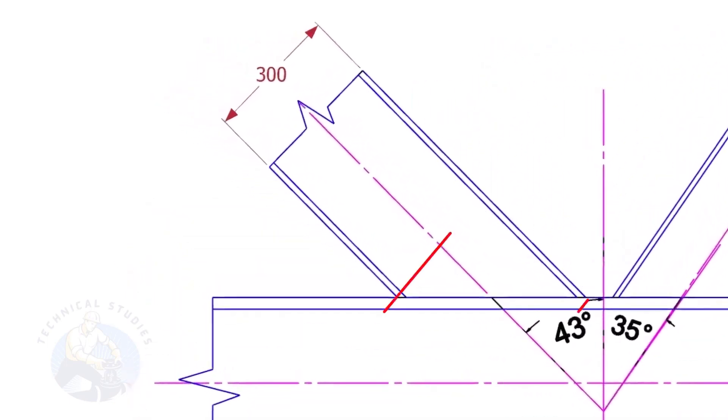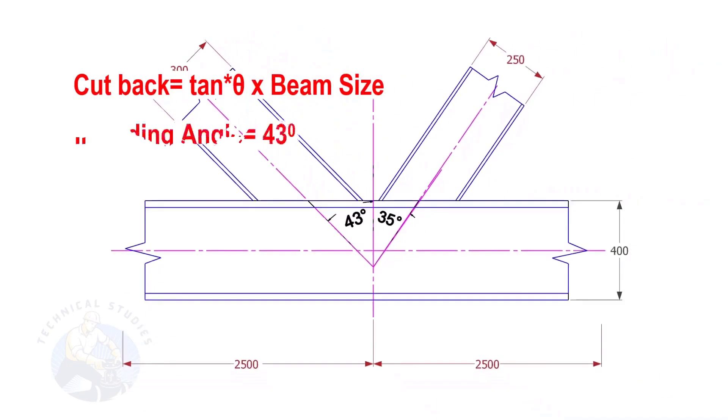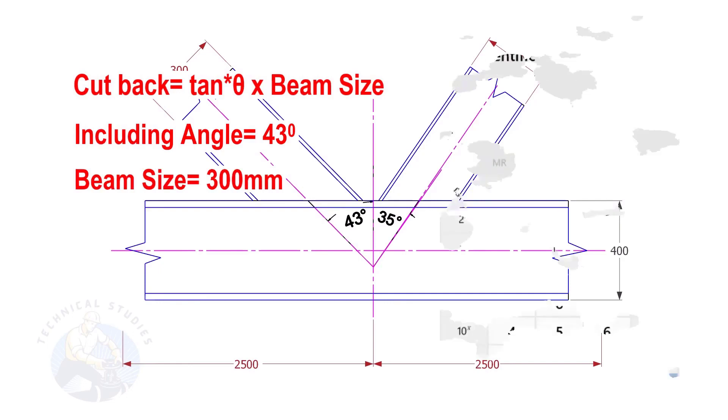Let us calculate the cutback of this beam. The formula to calculate the cutback is tan degree multiplied by the size of the beam. If the including angle is 43 degrees and the size of the beam is 300, the cutback is tan 43 into 300.